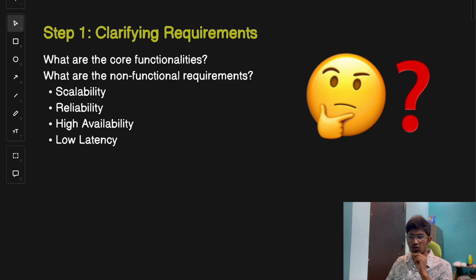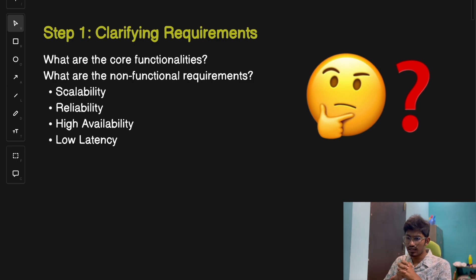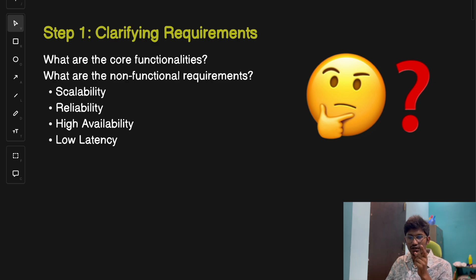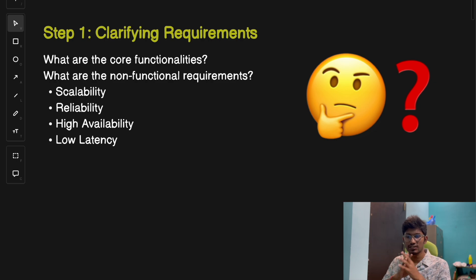Now for non-functional requirements: first is scalability — the system should handle millions of users and billions of URLs. Next is reliability — no data loss, and all URLs should remain functional indefinitely, meaning a shortened URL should work even after months or years. Then high availability — the system should be up and running 24x7. And finally, low latency — when you type a short URL in the browser, the redirection to the original URL should be near-instant.